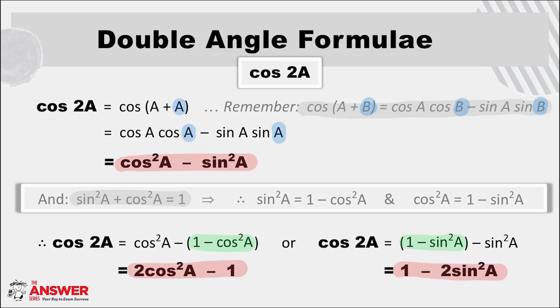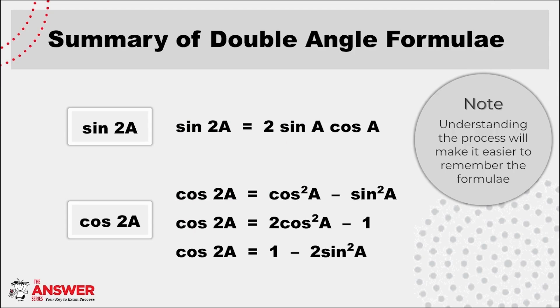In other words there are three different options for the expansion of cos of a double angle. Here is a summary of all the double angle formulae which you may find helpful to look through at this point in your learning. Hopefully having worked through how these came about will help you to recognize and more importantly to be able to remember them more easily.